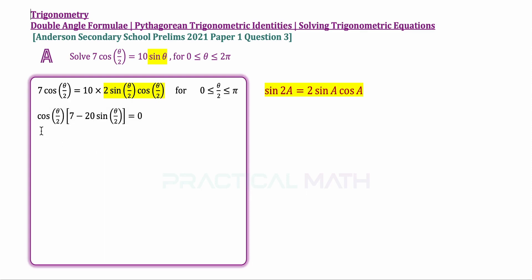Now the first solution set happens when we set cosine theta over 2 to be equal to 0. When will cosine be 0? We can refer to our trigonometric sketch. Cosine curve will be 0 at angle π over 2 as well as 3π over 2. Now 3π over 2, if you do a simple check against the converted range, is definitely out of range. So there's only one solution from this solution set. The angle will be π over 2, so theta over 2 equals π over 2.